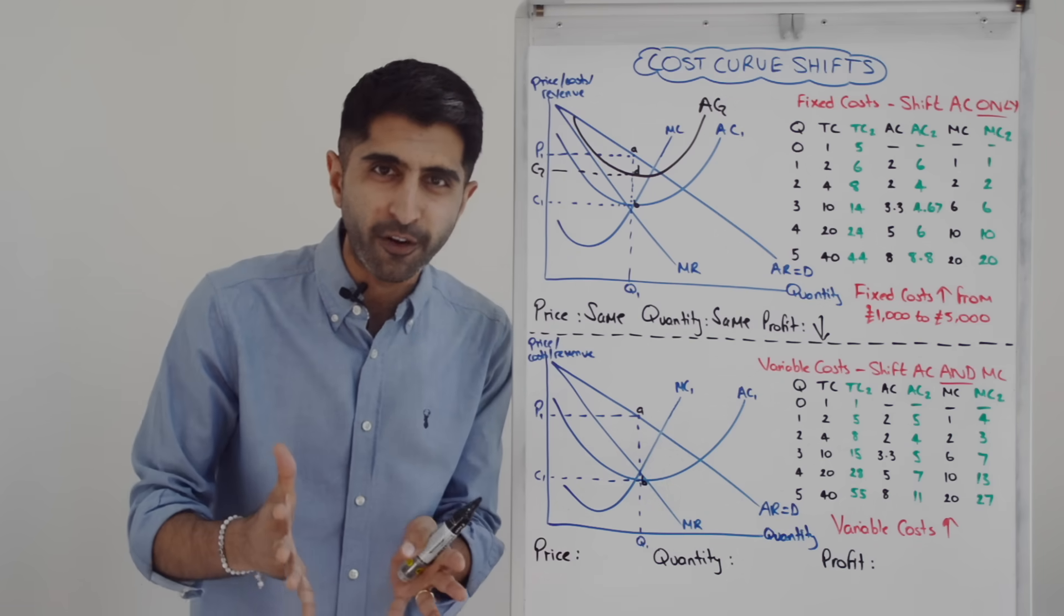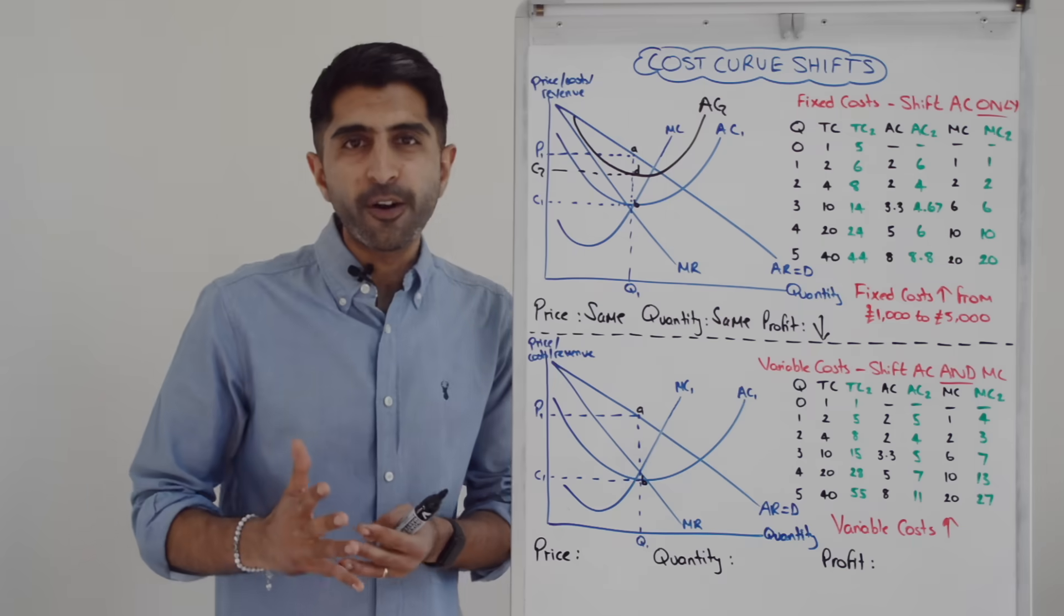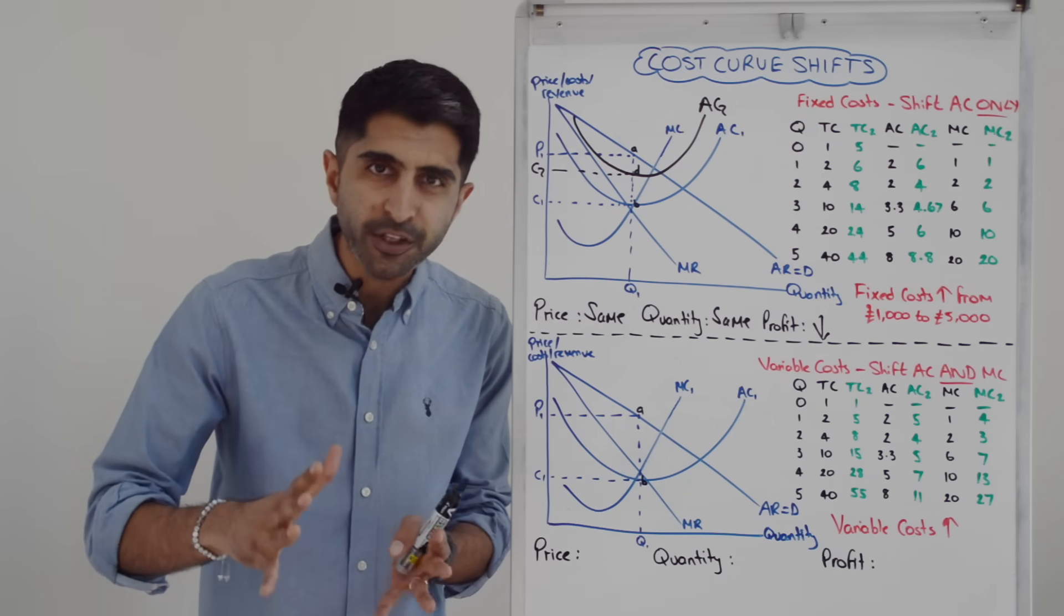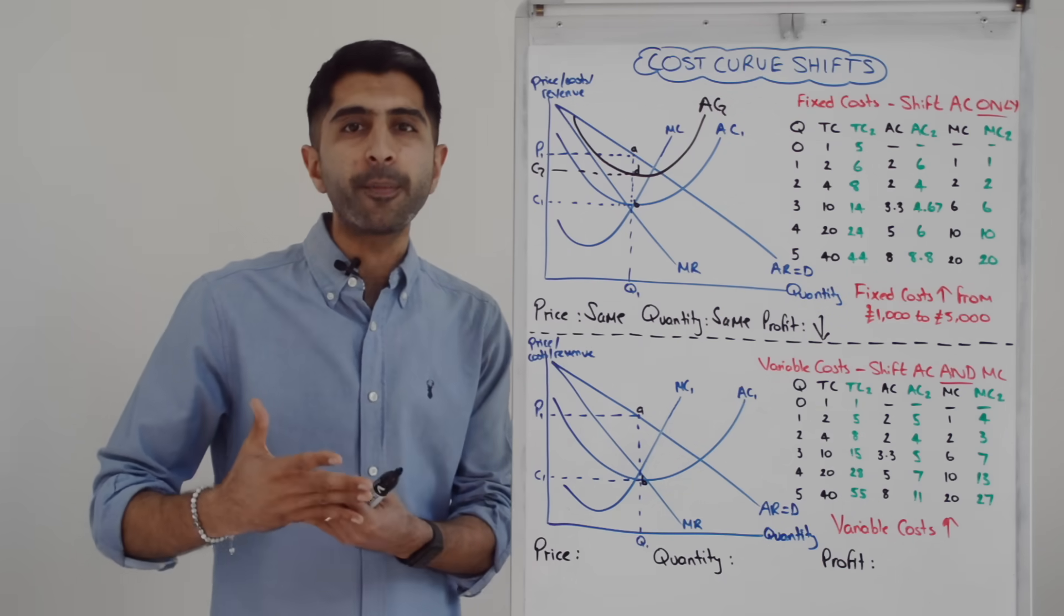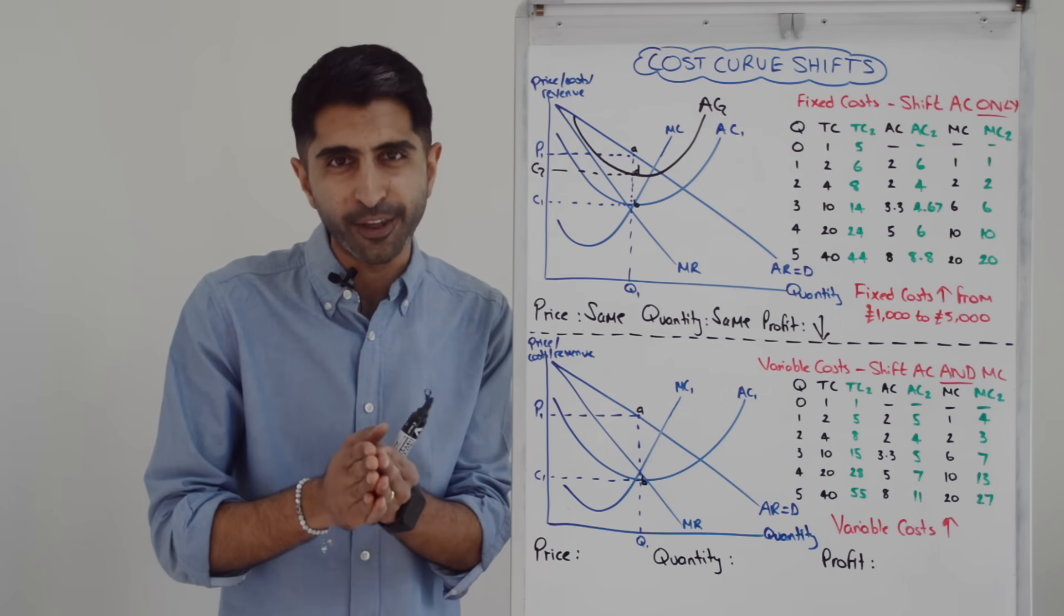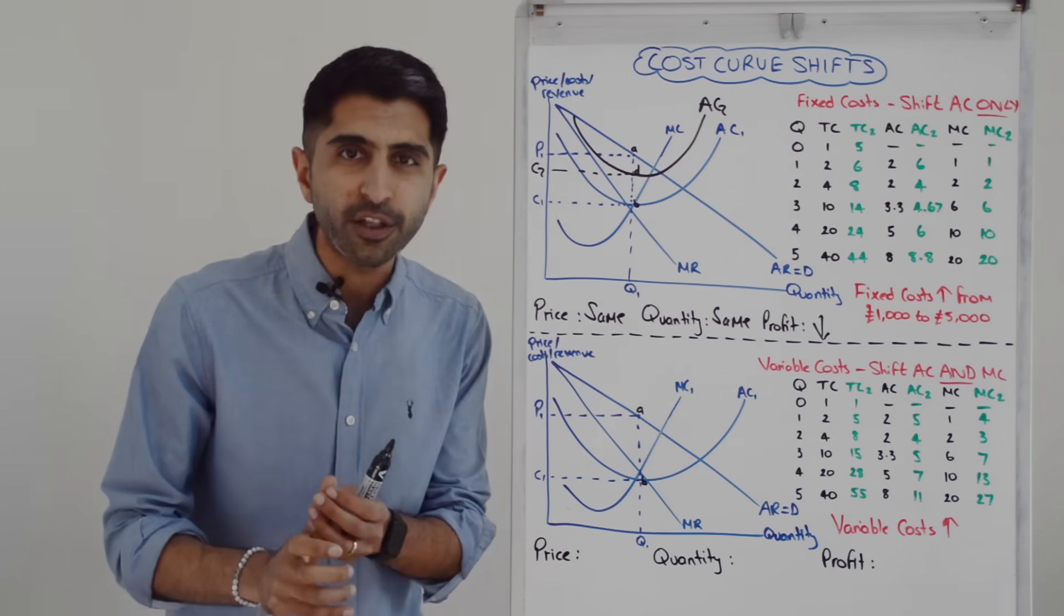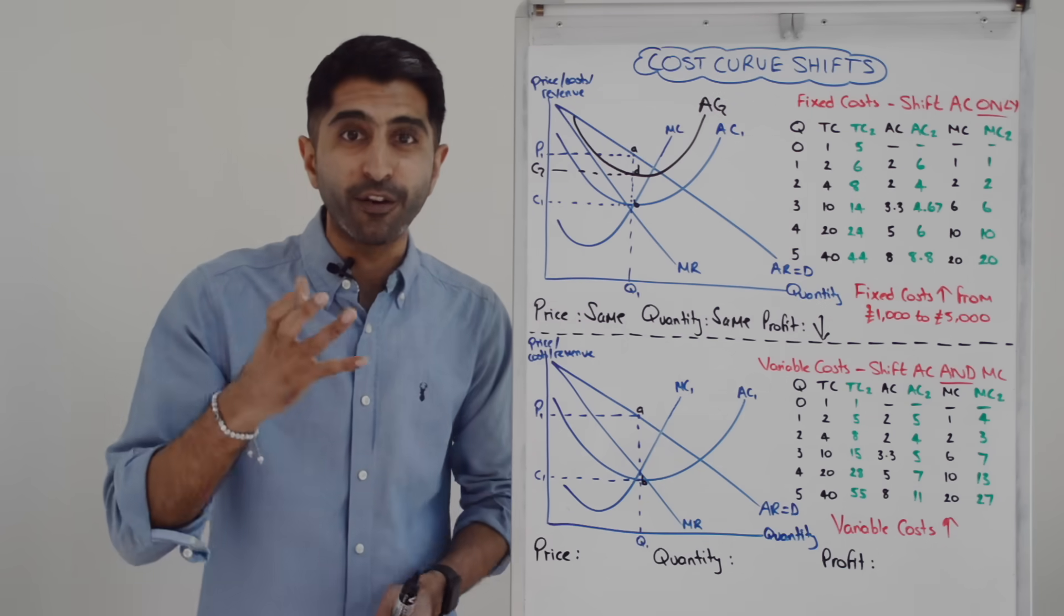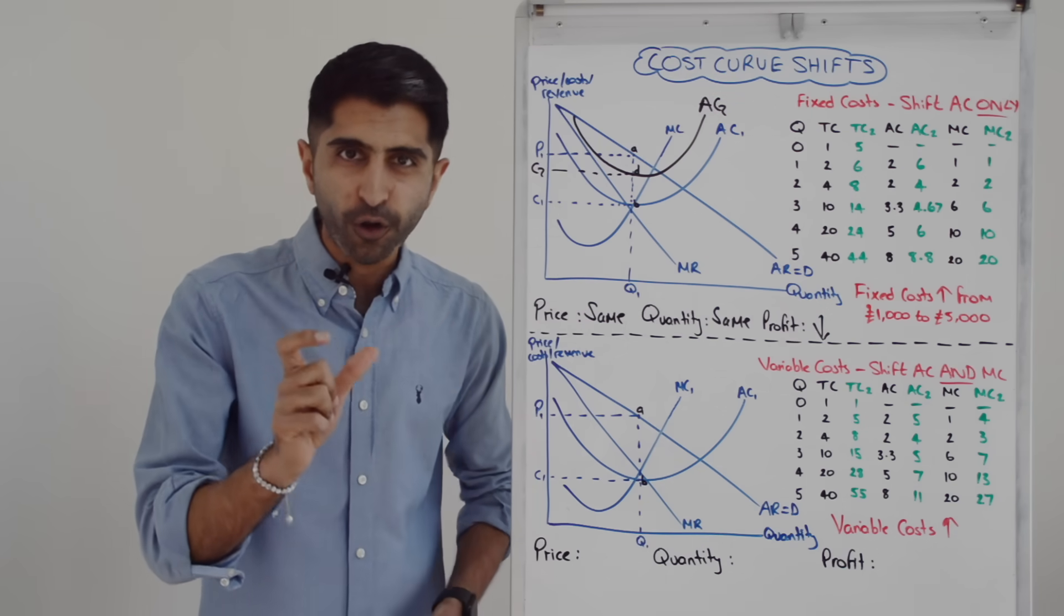What about a change in variable costs? Good examples of variable costs would be transport costs, raw material costs, utility bills, wages. When there is a change in variable costs, we shift the AC curve, but also we shift the MC curve. And that's because with a change in variable costs, there is a change in the rate of change of total costs, i.e. marginal cost is affected.